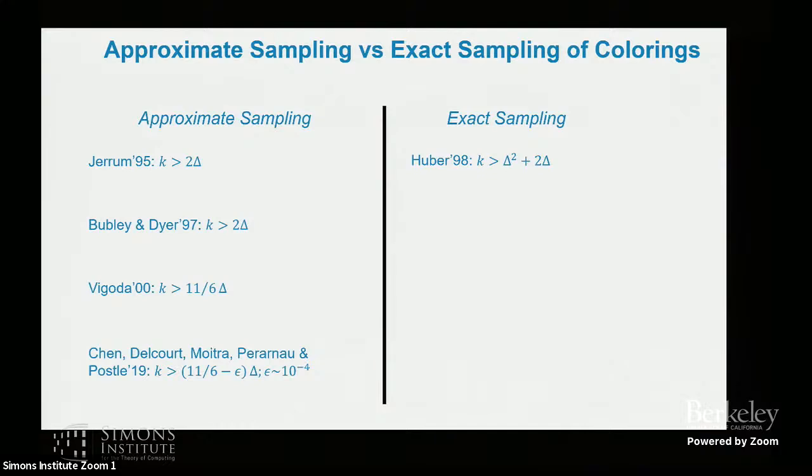But on the side of exact sampling or perfect sampling, not too much was known. The seminal result was of Huber who came up with a very nice technology to even be able to perfectly sample. But you can see that the number of colors required are quadratic in delta. So there was a huge gap between the two regimes. And then there was a big interlude. And in 2019, Feng, Guo, and Yin were able to improve this bound by some linear factor in delta for very restricted families of graphs. So the number of colors should not be more than log log n.